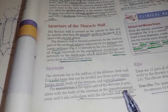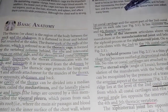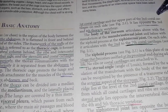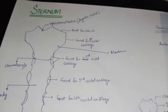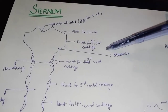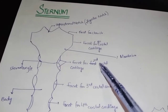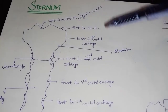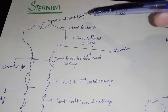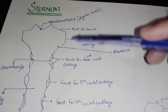The manubrium is the upper part of the sternum. It articulates with the body of the sternum at the manubriosternal joint, and it also articulates with the clavicle, the first costal cartilage, and the upper part of the second costal cartilage on each side. It is opposite to the third and fourth thoracic vertebral bodies.